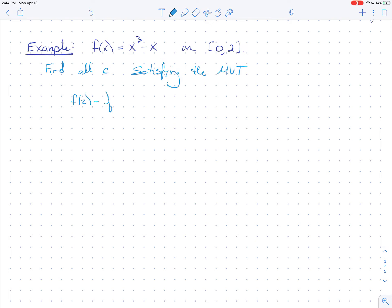So we want f(2) minus f(0) over 2 minus 0. Well this is just f(2) is 8 minus 2 is 6 minus 0 over 2. So this is just 3. The slope of the secant line is 3.